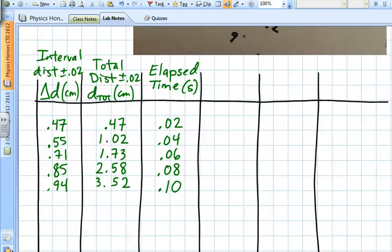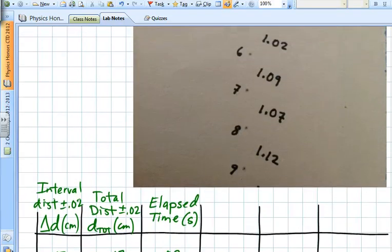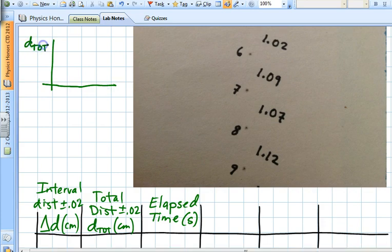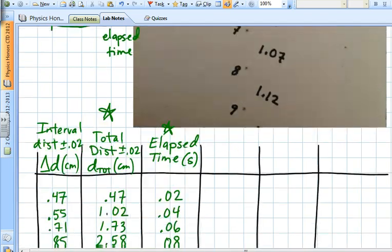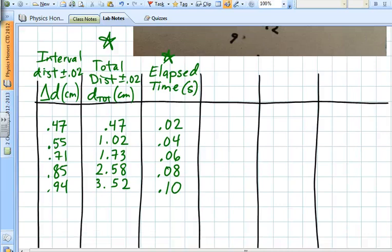Now that we have this, we can make one of our graphs. That's going to be a graph of the total distance versus the elapsed time, not the interval distance but the total distance versus elapsed time, so columns 2 and 3. We can put this on Excel, we can put it on the computer. We'll find ways to make this go faster. We will talk about how to work with this in Excel, but for right now we're just going to write it out by hand.